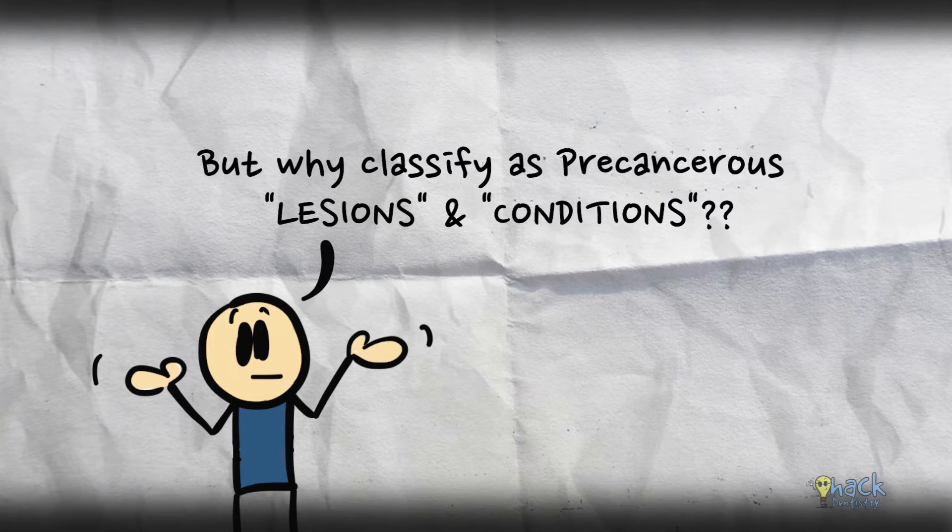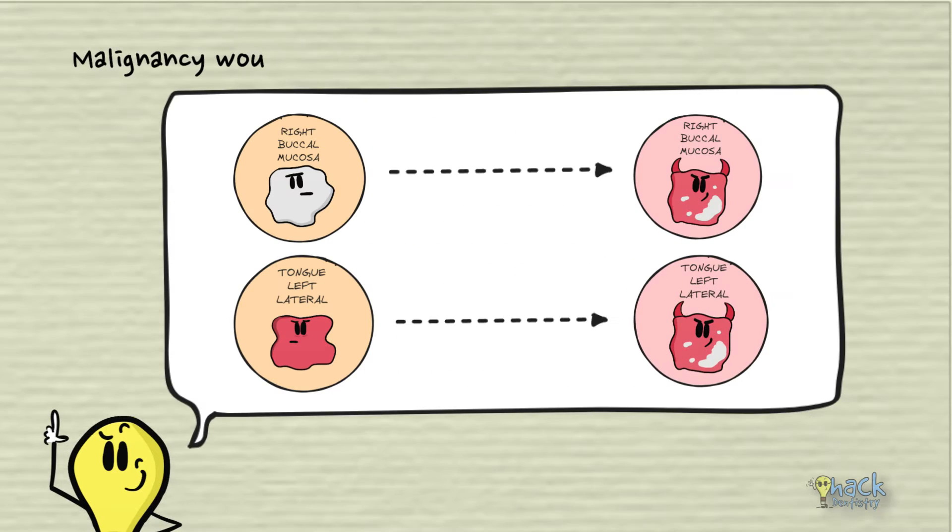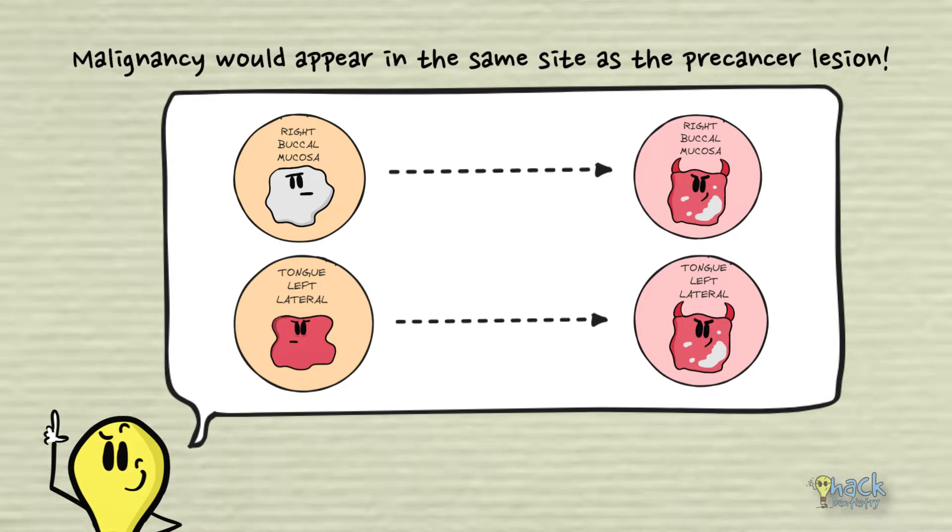But why classify these as precancerous lesions and conditions? At that time, this classification was not just academic. It was thought that malignancy occurring from a precancerous lesion would appear in the same site as the precancerous lesion, like leukoplakia or erythroplakia for example.